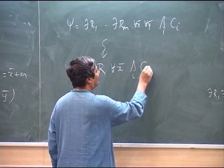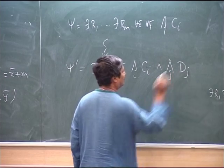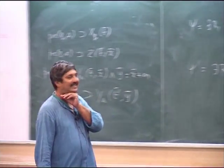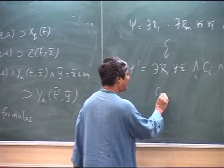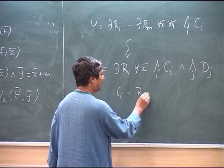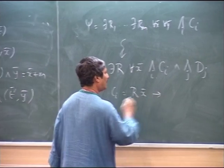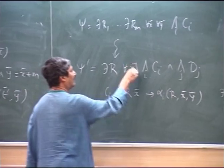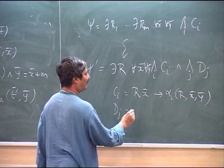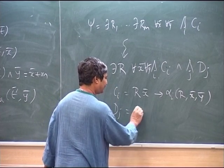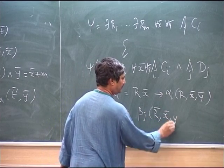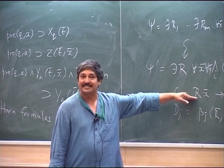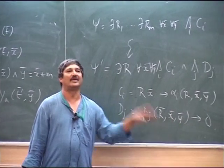You have the horn part broken into two sets of sentences. The C_i's have the form where r occurs, with some alpha_i — r x-bar, r x-bar y-bar — and the D_j's are the other form. You split it into those with only positive atoms and those where all negative ones are separated out.